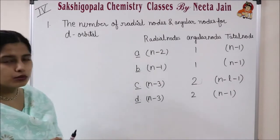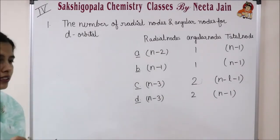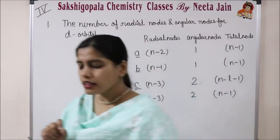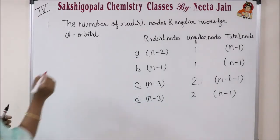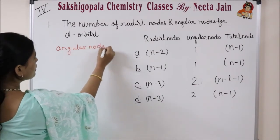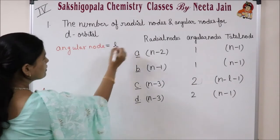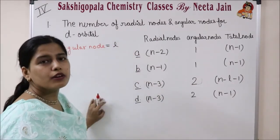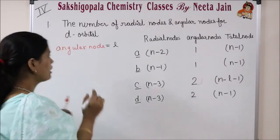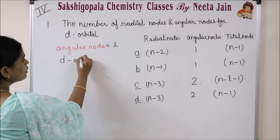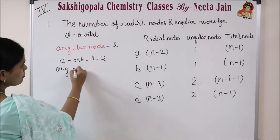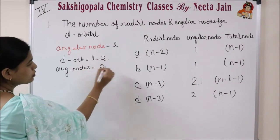The number of radial nodes and angular nodes for d-orbital. The formula for the angular node is equal to L. The value of L is the number of angular nodes. For the d-orbital, L equals to 2. So the number of angular nodes is 2.